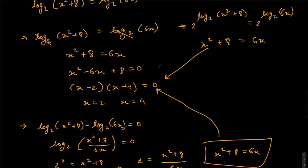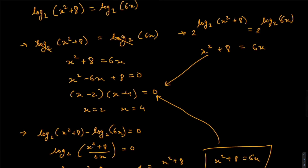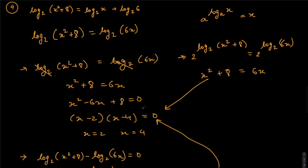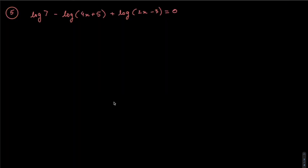My point is there are multiple ways to approach these problems. Once you understand how the concepts work, you can use the shortcut of canceling the log functions directly to save time. The examiner will award marks as long as you show you're removing the log function and simplifying both sides of the equation.